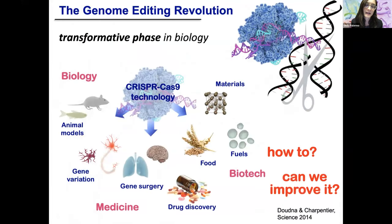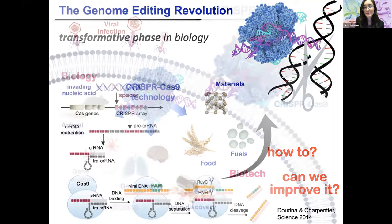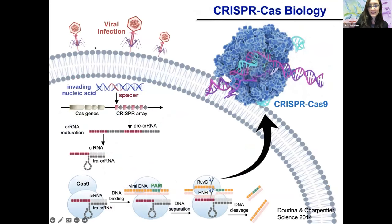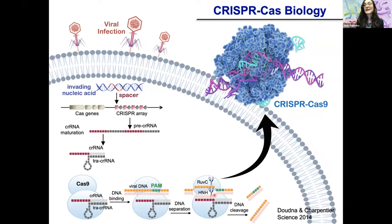As everybody knows, this system, CRISPR-Cas9, has triggered a revolution in life sciences, enabling facile genome editing in many fields. Our goal was to use computational methods to understand how it works and how we can improve it. This system derives from a viral infection in a bacterial system. The virus injects its own genetic material, which gets embedded into the bacterial genome and expresses a protein, Cas9, which binds a guide RNA, which is able to recruit the initial viral DNA for double-stranded DNA cleavages.